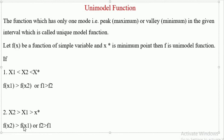So when x2 is greater than x1 which is greater than x*, then f2 is greater than f1. So f2 is a unimodal function value for variable x2, and f1 is a unimodal function value for variable x1. When x1 is smaller compared to x2, the function at x1 is greater compared to the function at x2.